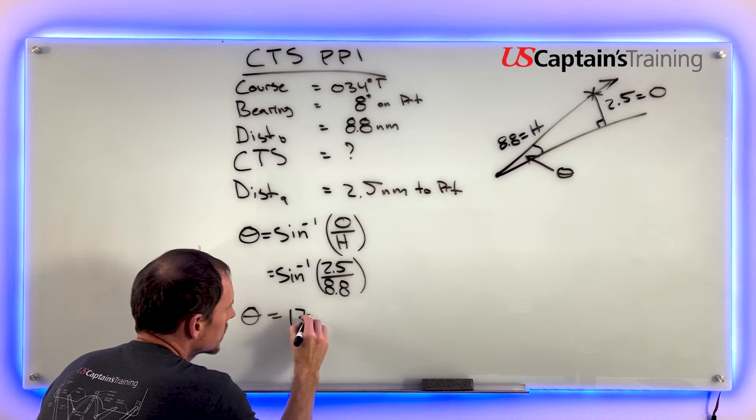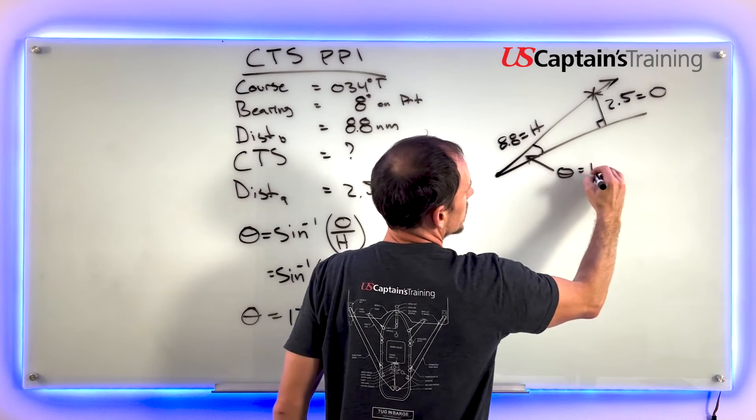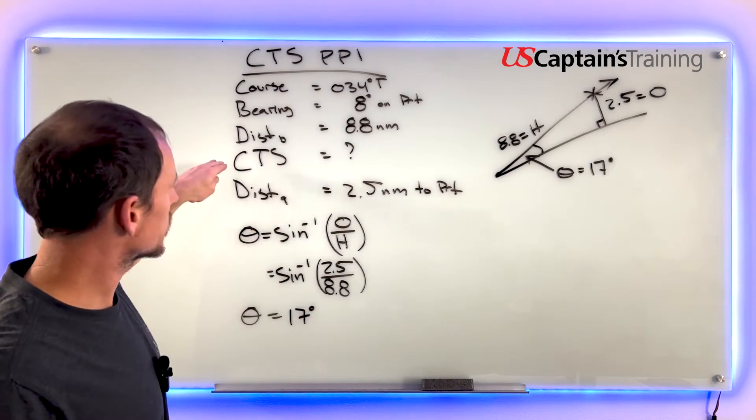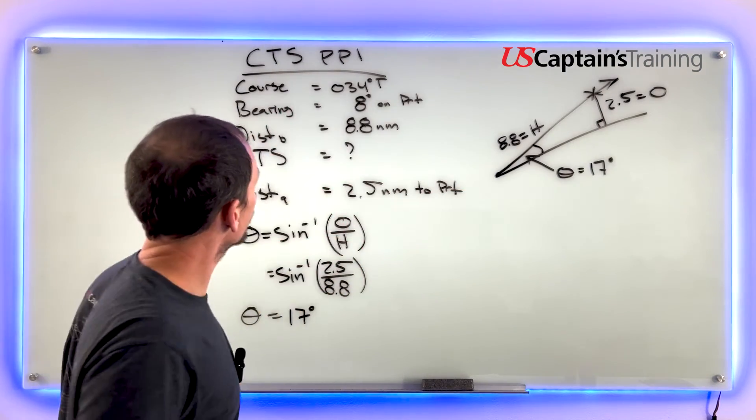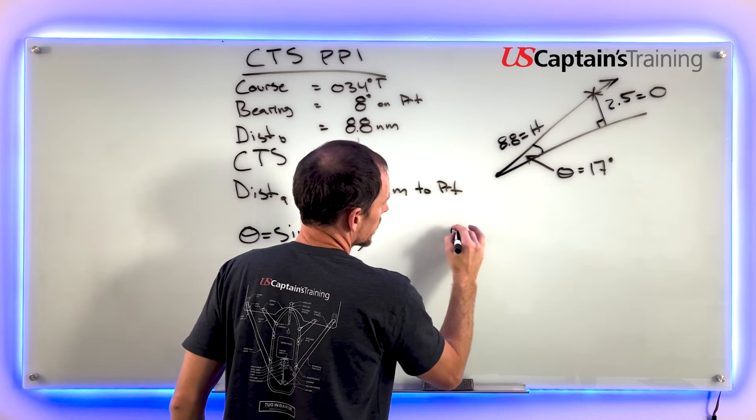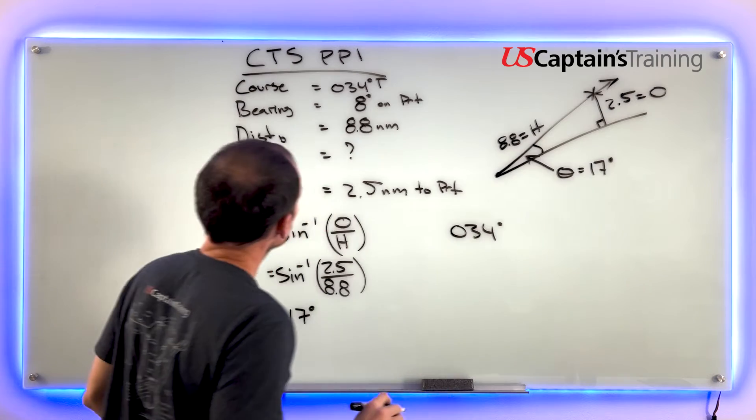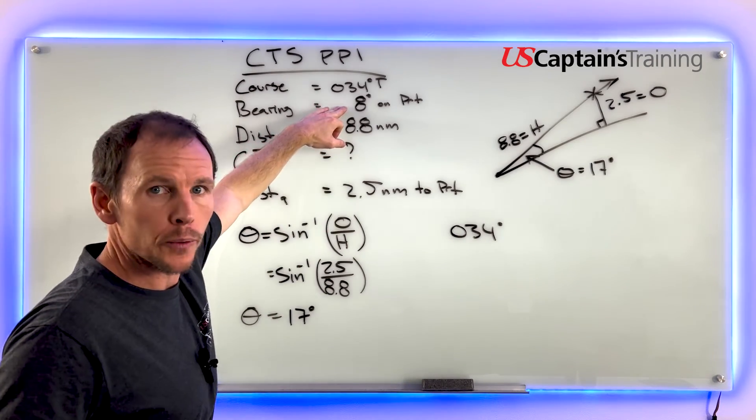This is 17 degrees, and now we can find our course to steer. We started on course 34 degrees true, and then it said there was a bearing 8 degrees on our port. We need to account for that.